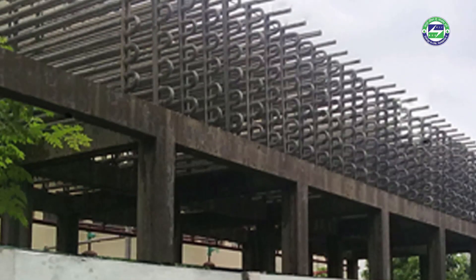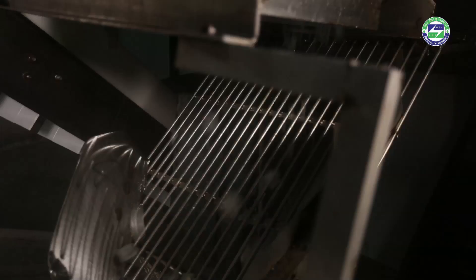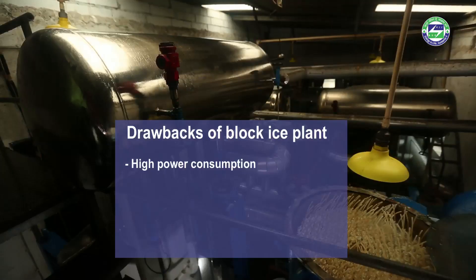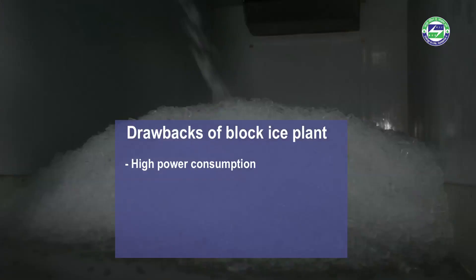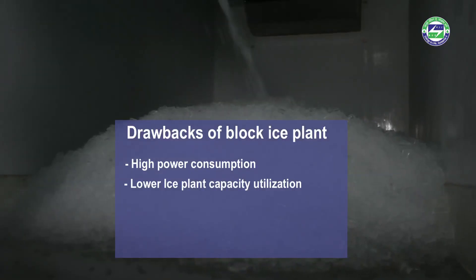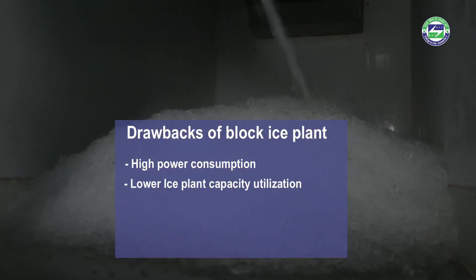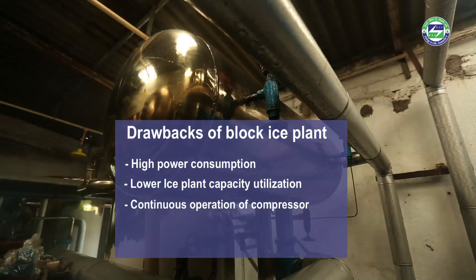The conventional system suffers from low efficiency due to high power consumption in the refrigeration compressor and other equipment like agitators and water pumps. Lower ice plant capacity utilization also results in low efficiency, and continuous operation of the compressor is required to maintain the brine temperature below freezing.